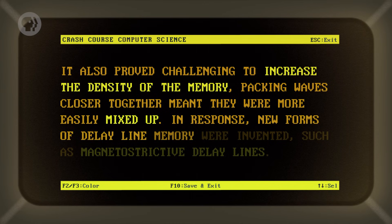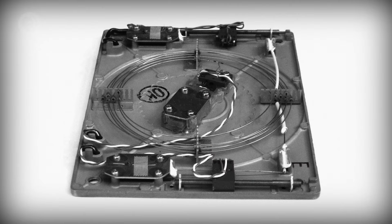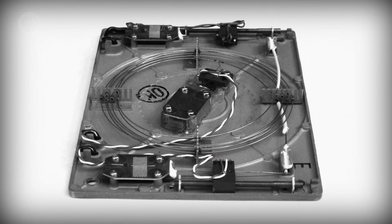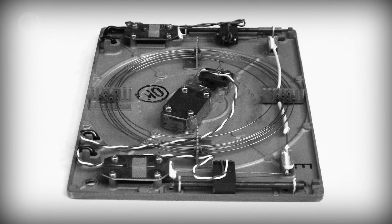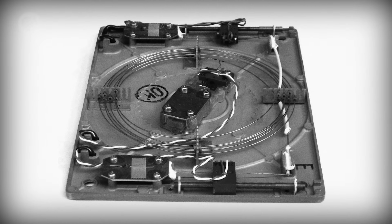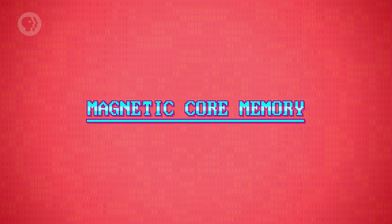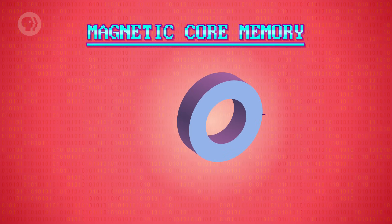In response, new forms of delay line memory were invented, such as magnetostrictive delay lines. These used a metal wire that could be twisted, creating little torsional waves that represented data. By forming a wire into a coil, you could store around a thousand bits in a one-foot by one-foot square. However, delay line memory was largely obsolete by the mid-1950s, surpassed in performance, reliability, and cost by a new kid on the block — magnetic core memory, which was constructed out of little magnetic donuts called cores.